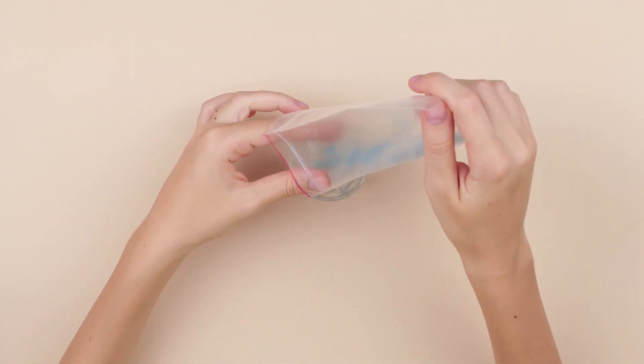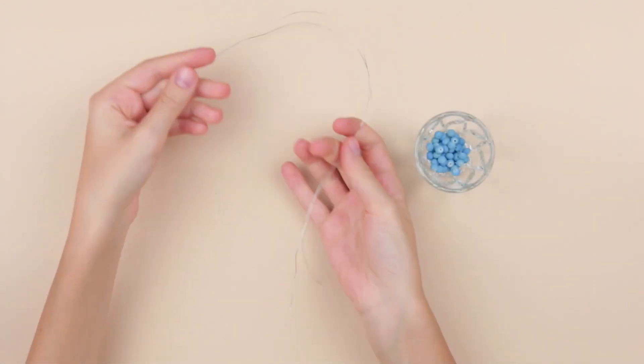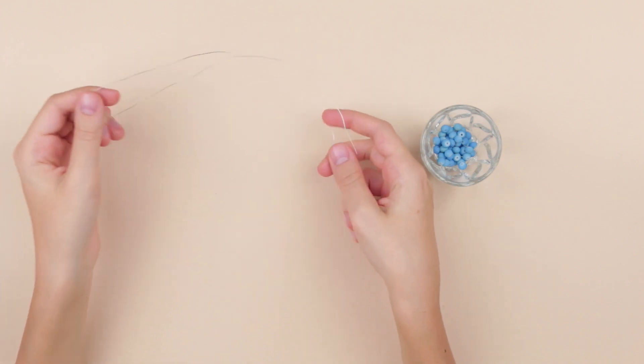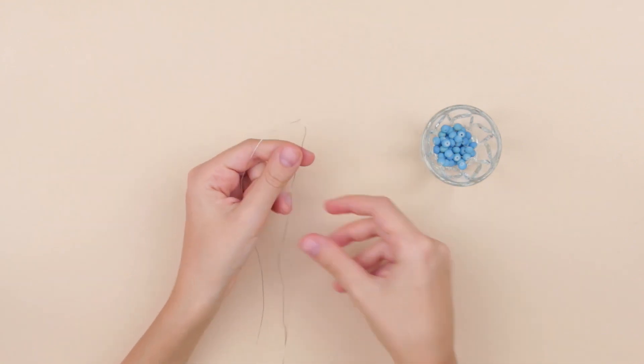So we've chosen blue beads. We also need wire. Bend it in half and thread four beads.